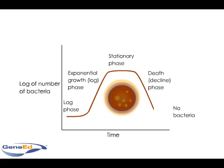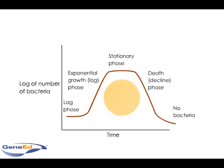As all nutrients in the environment are used up, the bacteria population enters the final phase, termed death or decline. Individual bacteria begin to die off from lack of nutrients, and eventually the number of dead cells exceeds the number of live bacteria. At this phase, the bacterial population is either radically reduced or completely destroyed.